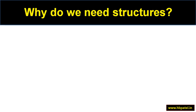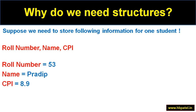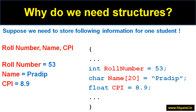Let us start with the first question: why do we need a structure? To understand it, we have a specific scenario. Let's say I want to store a few pieces of information about a particular student — roll number, name, and cumulative performance index (CPI). For example, roll number is 53, name is Pradeep, and CPI is 8.9. This is very simple to handle in C programming.